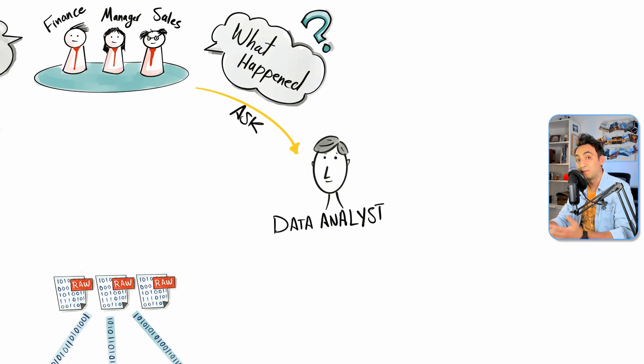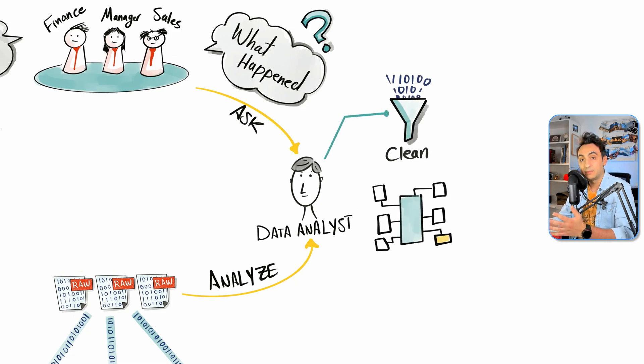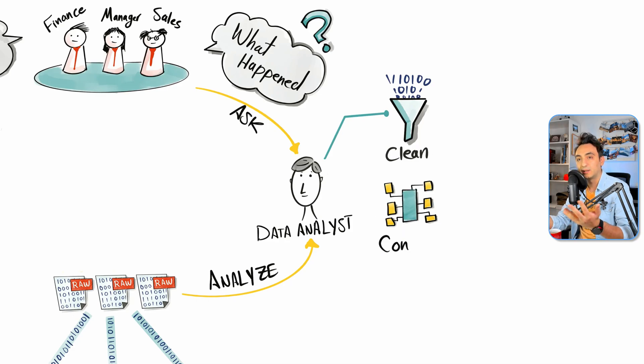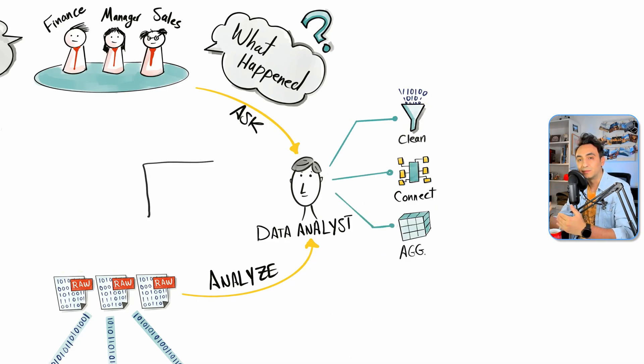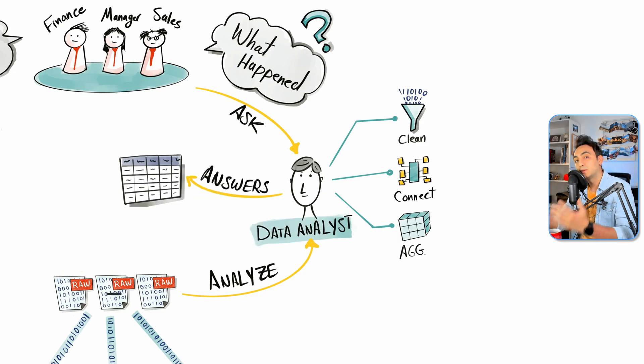The data analysts are going to go and start analyzing the raw data by doing some magic, for example, cleaning up the data, connecting objects together, and aggregating the data in different levels. At the end, the result will be communicated as, for example, a spreadsheet to the decision makers.